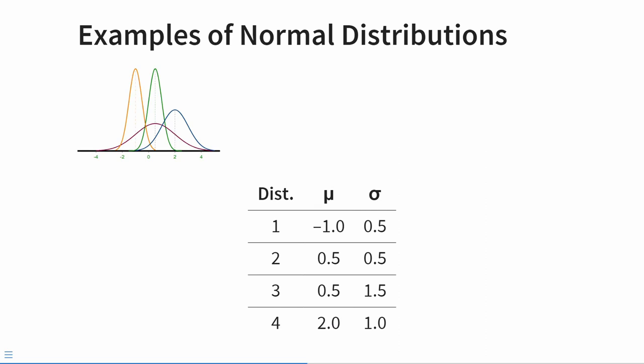We can describe what a normal distribution looks like with just two numbers called its parameters. The first is the mean, signified by the Greek letter mu, which tells us where the middle of the distribution is. The second is its standard deviation, which tells us how wide the normal distribution is — the average distance from the mean. In the picture you can see four examples of different normal distributions, each with information about their parameters.